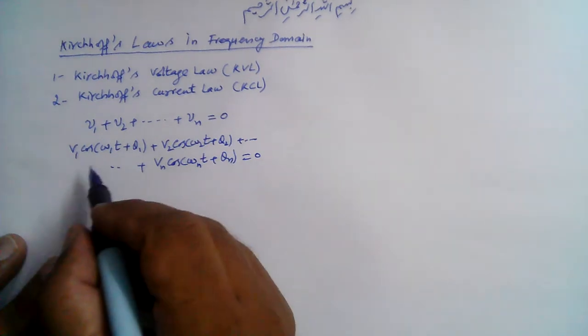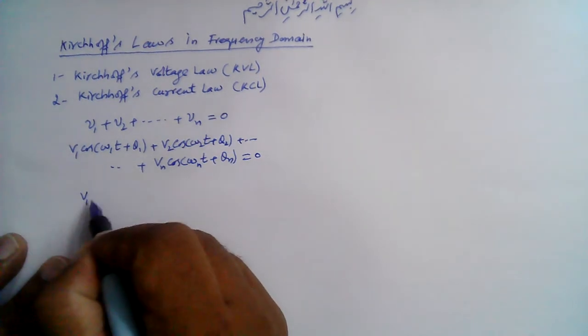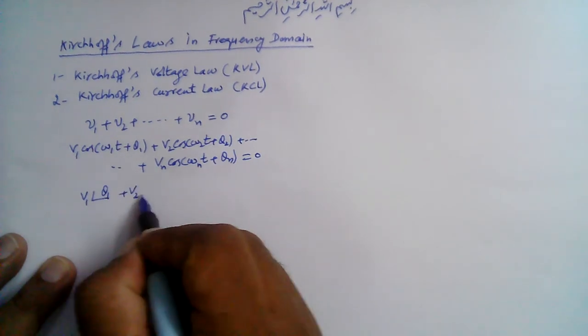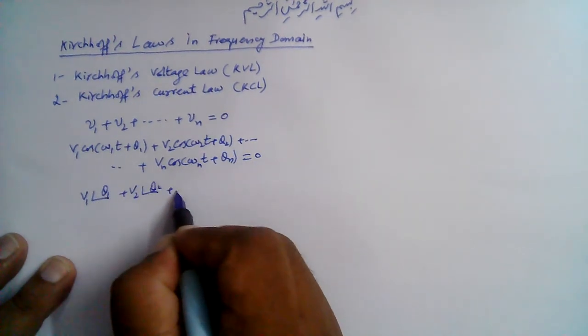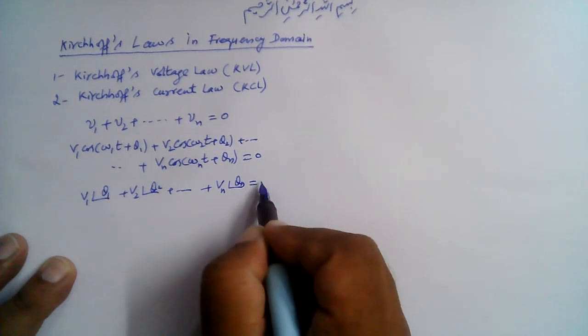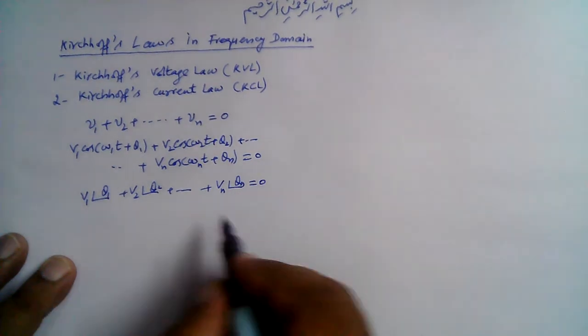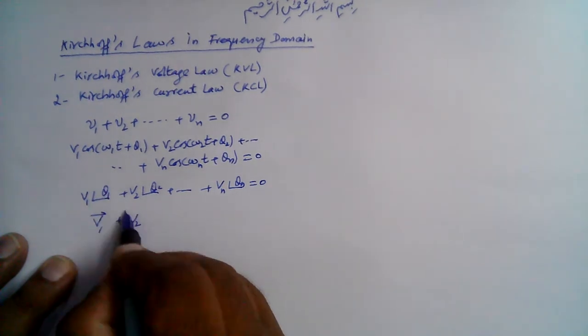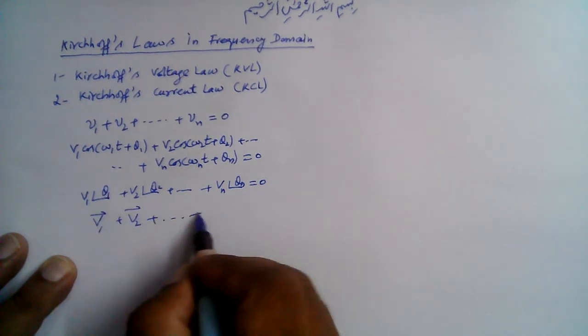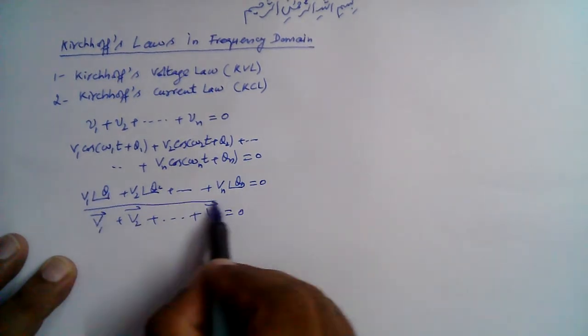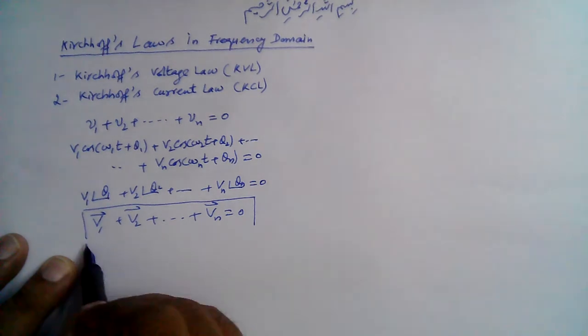...will be V1∠θ₁ plus V2∠θ₂ and so on VN∠θₙ, and that should be equal to zero. This can be represented as V̄₁ plus V̄₂, the phasor representation, plus V̄ₙ equals zero. This shows that Kirchhoff's...